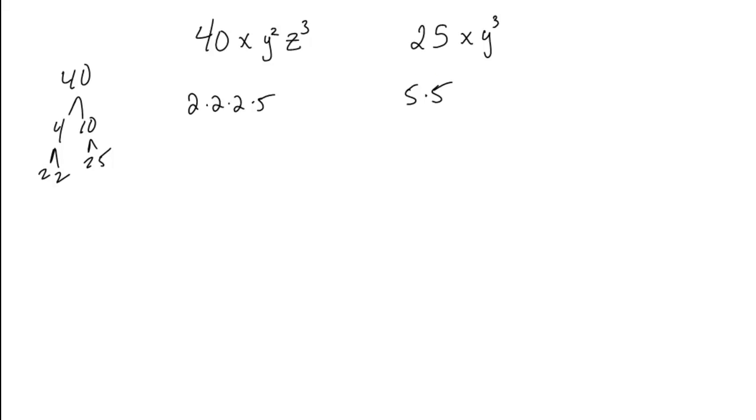Alright. Then I can pick what's in common. Only one five is in common. So when I'm writing the GCF, the five is the in common factor of the numbers.